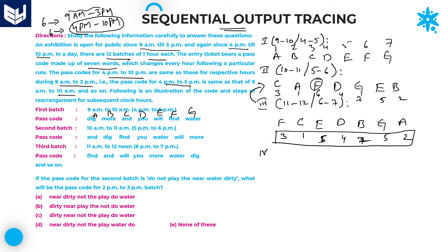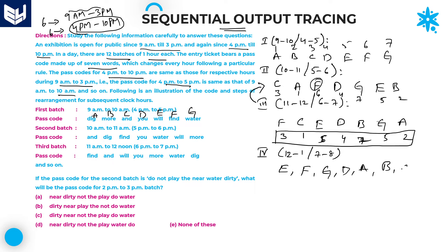For the fourth batch — 12 to 1 and 7 to 8 — applying the same rule: third position is E, first position is F, sixth position is G, fourth position is D, seventh position is A, fifth position is B, second position is C.